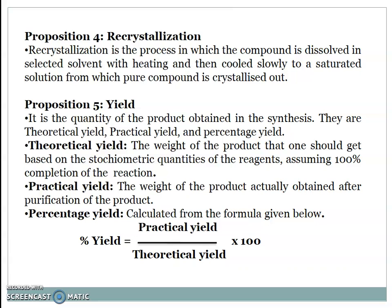Proposition 5: Yield. It is the quantity of product obtained in synthesis. Types include: Theoretical yield - the weight of product that one should get based on stoichiometric quantities assuming 100% completion; Practical yield - the weight actually obtained after purification; and Percentage yield - calculated from the formula: % Yield = (Practical yield / Theoretical yield) × 100.